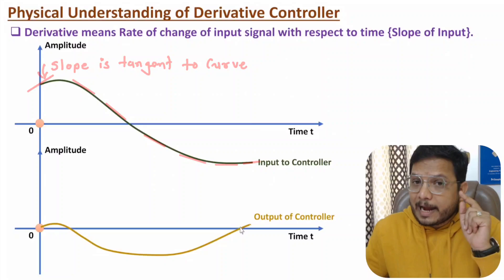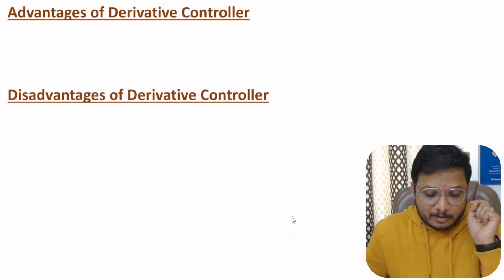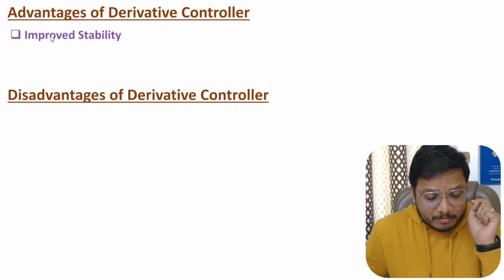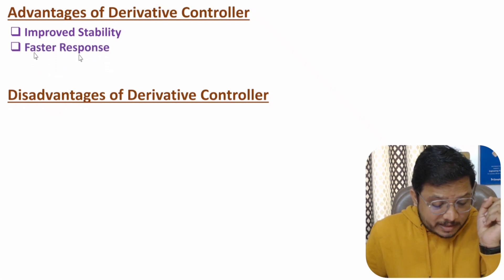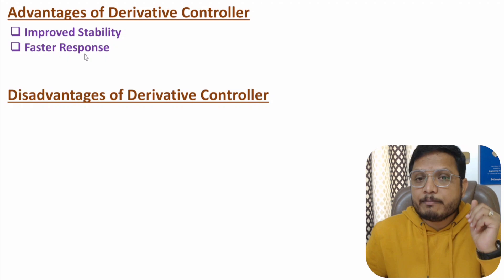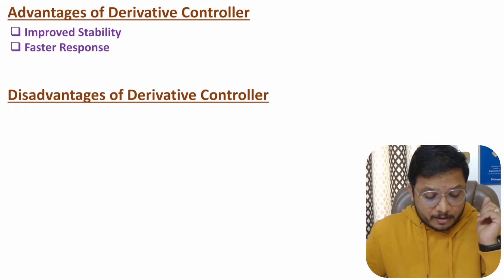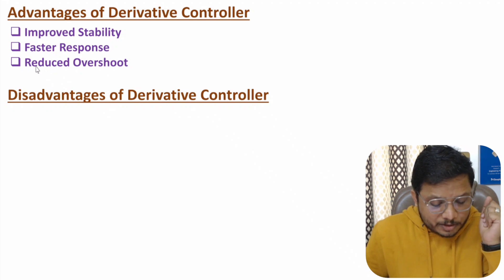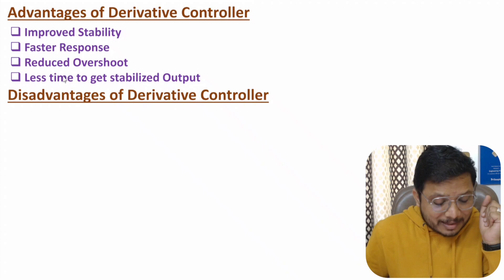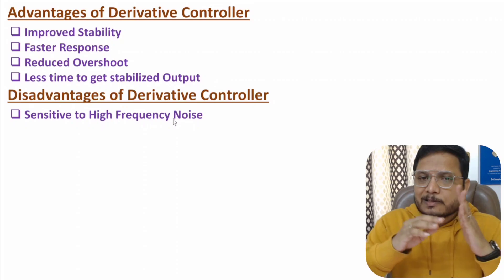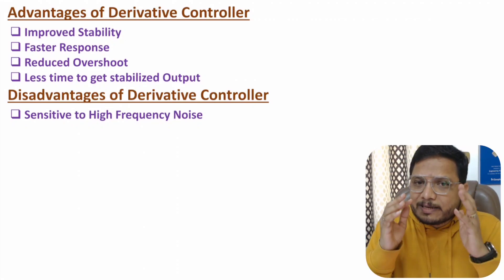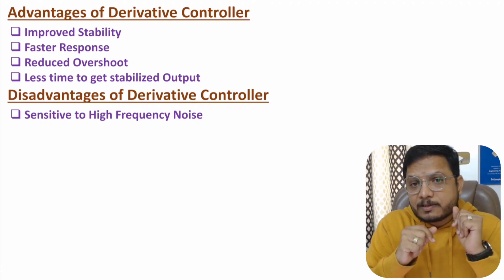The advantages of the derivative controller include: better stability compared to a normal second order system, because we are adding zeros to the system; faster response — by adding a derivative controller we improve response speed; and reduced overshoot, with less time needed to reach a stabilized output. However, a disadvantage is that it is sensitive to high frequency noise, because at high frequencies the slope of the signal becomes sharp.